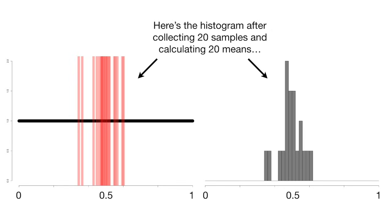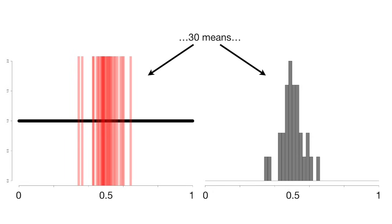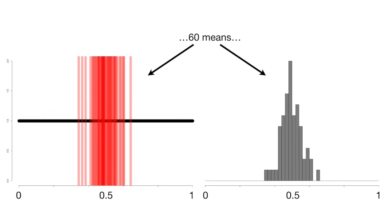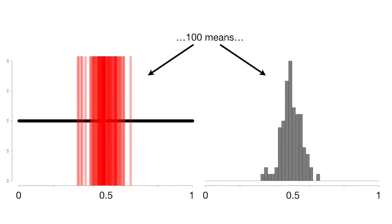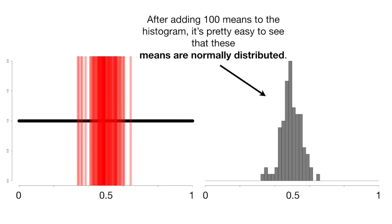Here's the histogram after collecting 20 samples and calculating 20 means, then 30 means, 40 means, 50 means, 60 means, 70 means, 80 means, 90 means, and 100 means. After adding 100 means to the histogram, it's pretty easy to see that these means are normally distributed.